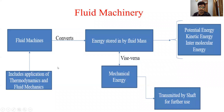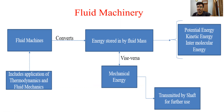Fluid machinery is the machine that converts the energy stored in a fluid to mechanical energy. Or we can convert mechanical energy into fluid energy with the help of fluid machines. The energy in a fluid includes potential energy, kinetic energy, and intermolecular energy. This energy that water itself contains is converted into mechanical energy. Fluid machines are an application of thermodynamics and fluid mechanics, and the mechanical energy developed is transmitted to the generator shaft — for example, for the generation of electricity.